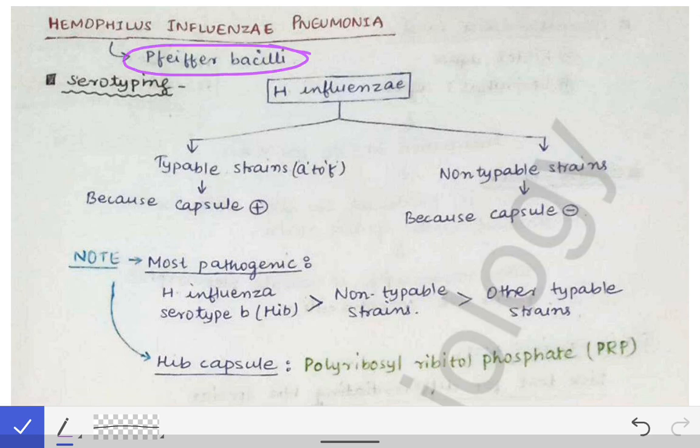Haemophilus influenzae is also called Pfeiffer's bacilli. There are some important typing classifications one should know. Haemophilus influenzae can be classified into typable strains and non-typable strains. The basis behind this classification is the bacterial capsule — if the capsule is present, it is a typable strain; if the capsule is absent, it is a non-typable strain.